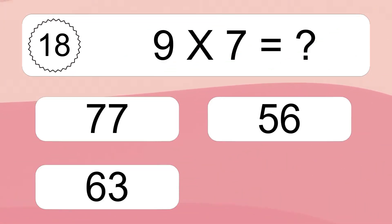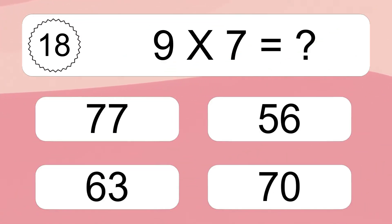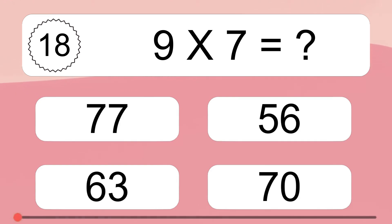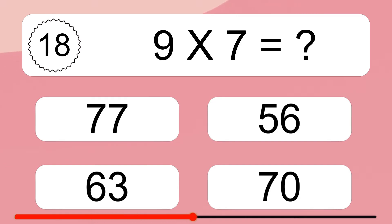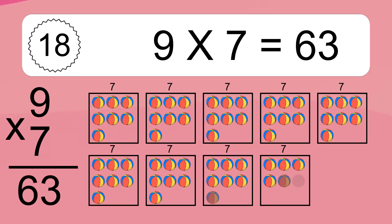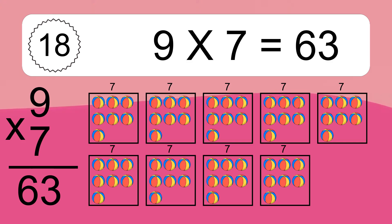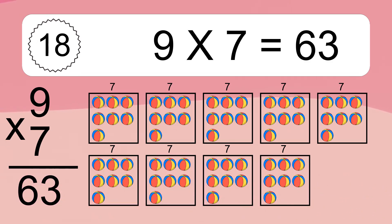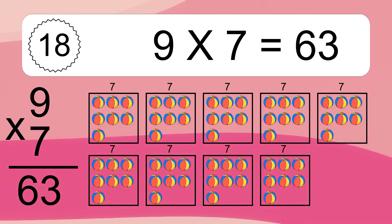9 times 7 equals what? We have 9 boxes, and each box has 7 colorful balls inside. If you count all the balls in all the boxes together, you will have 9 times 7 balls. This equals 63 balls.